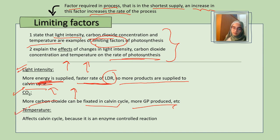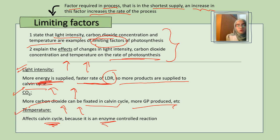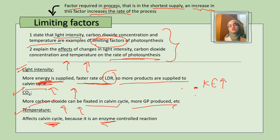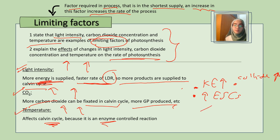For temperature: when temperature increases, the rate of photosynthesis also increases. The Calvin cycle contains enzymes, and increasing temperature means particles gain more kinetic energy, so they collide more frequently, forming more enzyme-substrate complexes per unit time, increasing the rate. This mainly affects the Calvin cycle, because it contains actual enzymes. Light-dependent reactions like photophosphorylation don't really get affected by temperature because they don't involve enzymes — NADP is a coenzyme, not an enzyme.